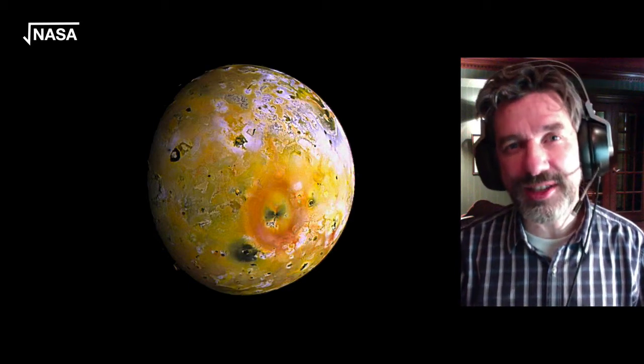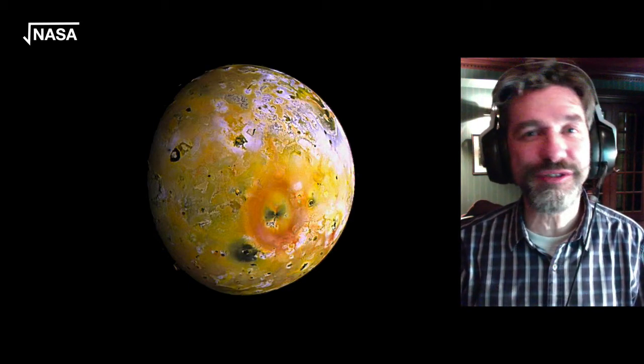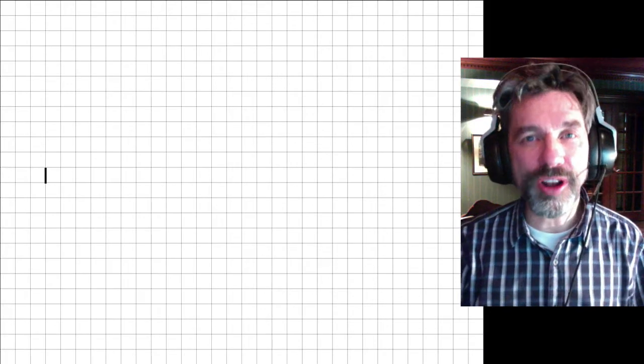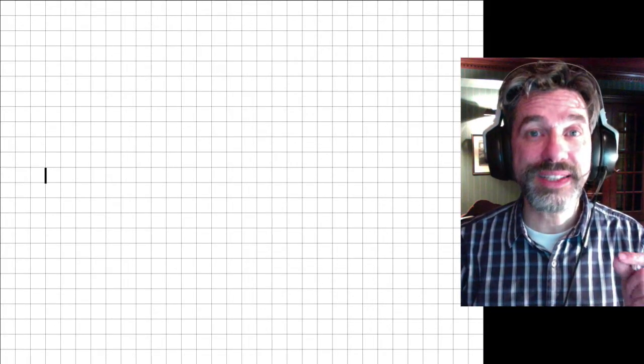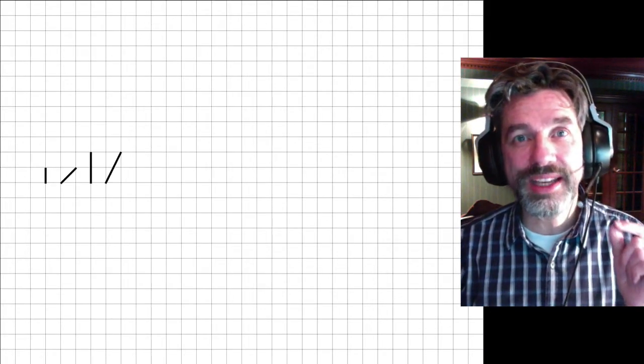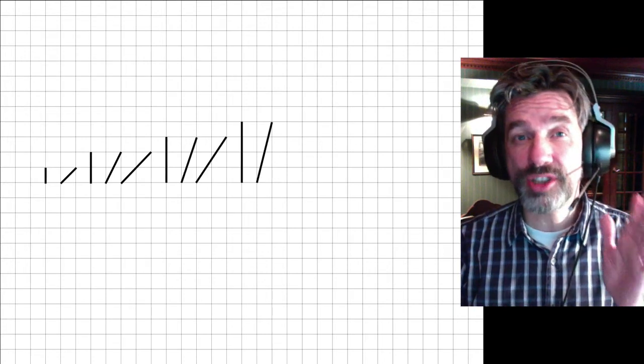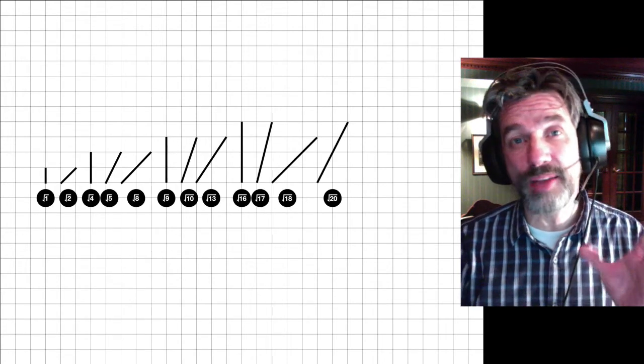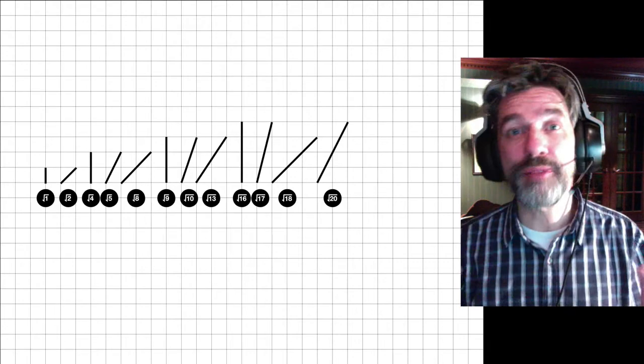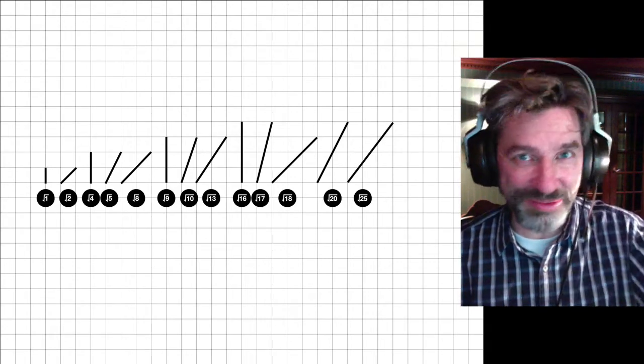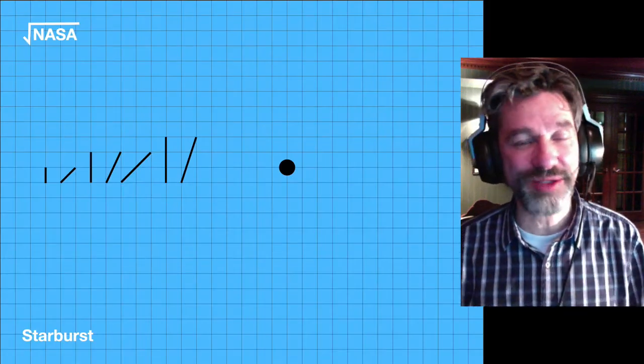Today we're going to be looking at three puzzles, collectively called rooting for NASA. All of them are going to be taking increasing line segments. So we're going to start off with the very smallest line segment that you can draw on a grid and moving up to infinity. We won't get there, probably, but we're going to start with the smallest one.